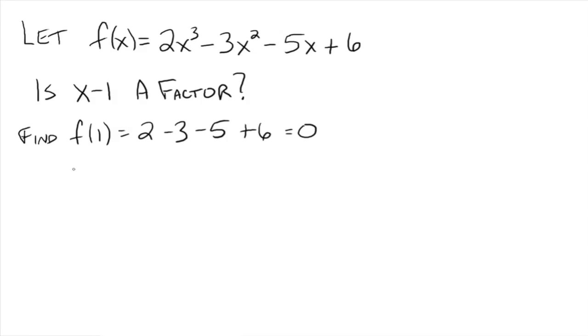Because f(1) is equal to 0, then x minus 1 is a factor of this polynomial f(x). Now that's fine and dandy, but we can actually do something else that would be even more useful. We can do the division. We can divide x minus 1 into f(x) here and if the remainder turns out to be 0, then x minus 1 is a factor.